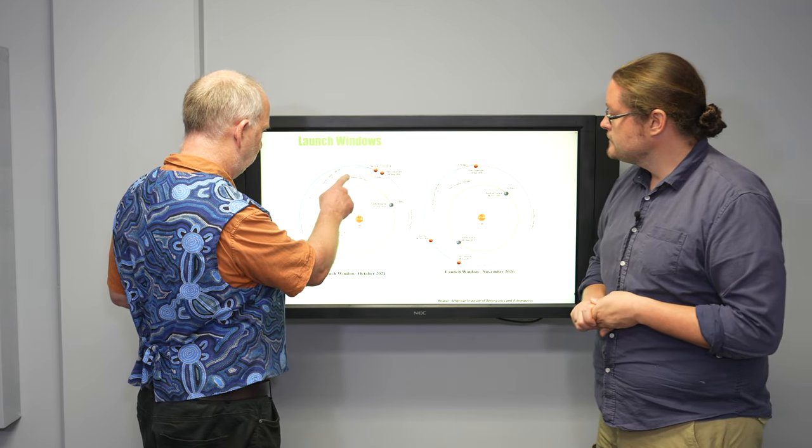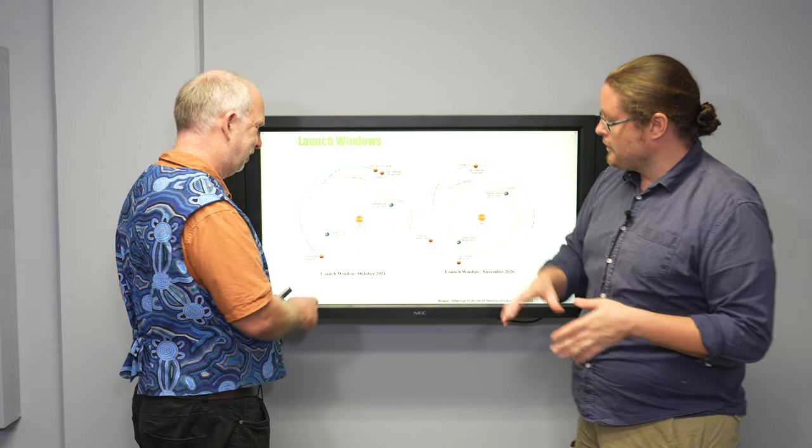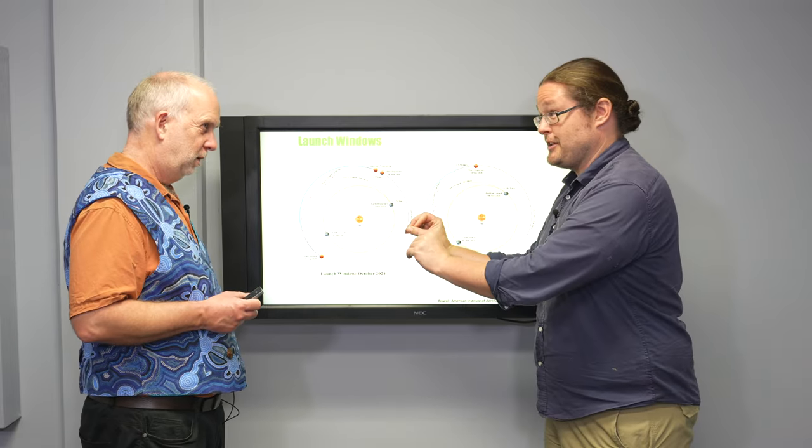Yep. And to a Hohmann transfer orbit. And that will take about 330 days, nearly a year to reach Mars. Okay. And again, this is optimal, right? We're not talking about worst case. This is the optimal scenario.